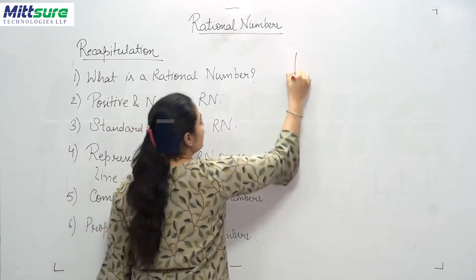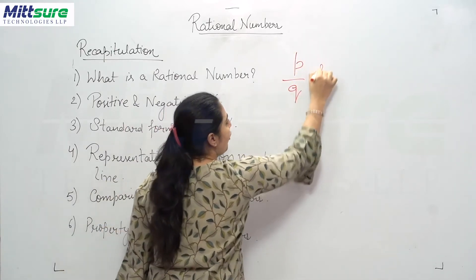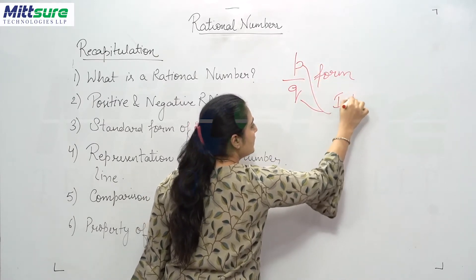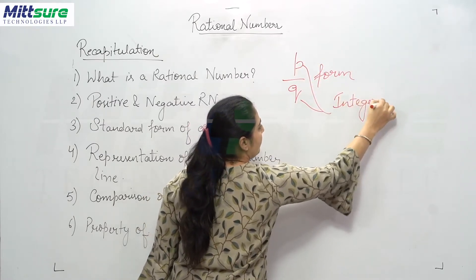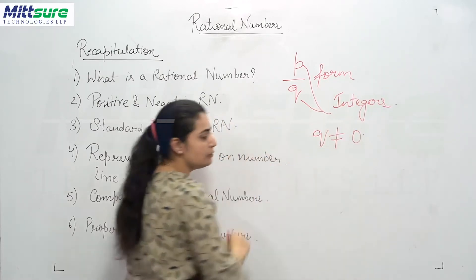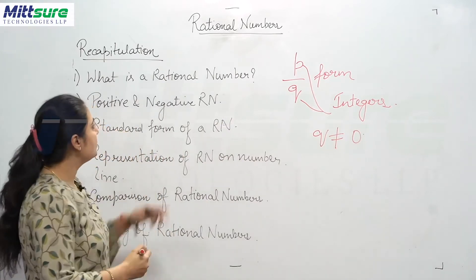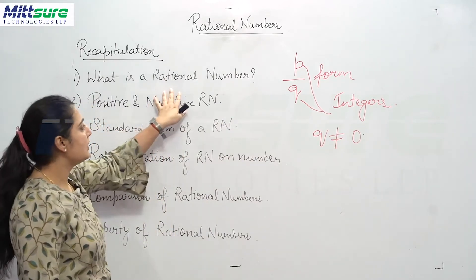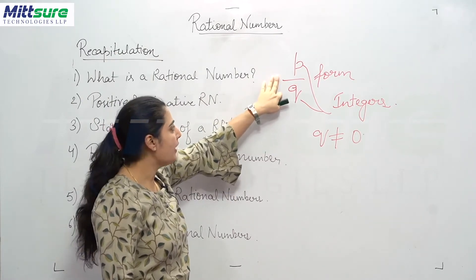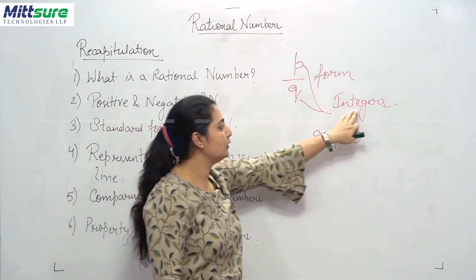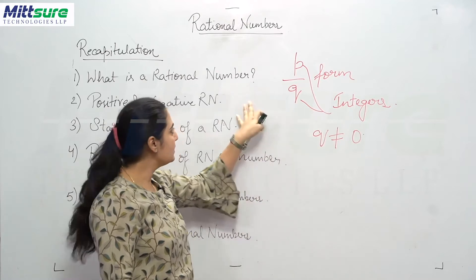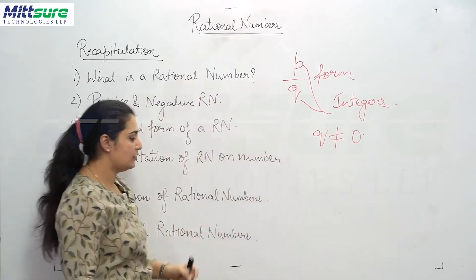A rational number is written in P upon Q form, where P and Q both are integers, and Q's value is not equal to 0. So a rational number is defined as a number written in P upon Q form where P and Q both are integers and Q is not equal to 0.